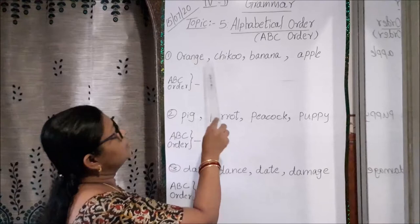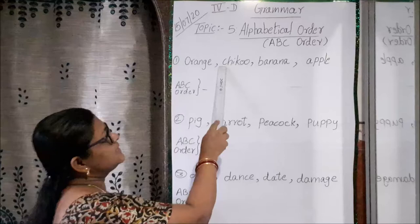So let's see the words: orange, chiku, banana, apple. So here it is beginning with O, your C, your B and your A is beginning.